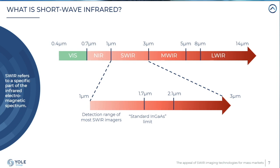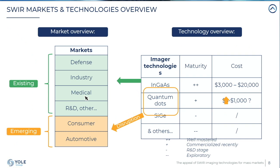Within the SWIR band, we can subdivide it into several sub-bands. Most commercial detectors sold on the market cover SWIR between 1 micron and 1.7 microns. The 1.7 micron limit corresponds to the detection limit of the standard InGaAs detector, which is why most applications operate in that range. Now let's have a quick overview of the different markets and technologies for SWIR imaging.